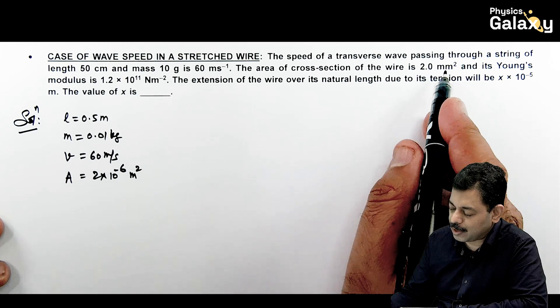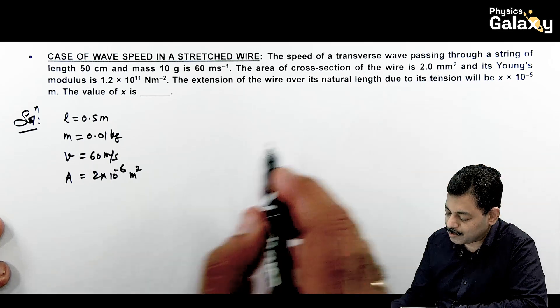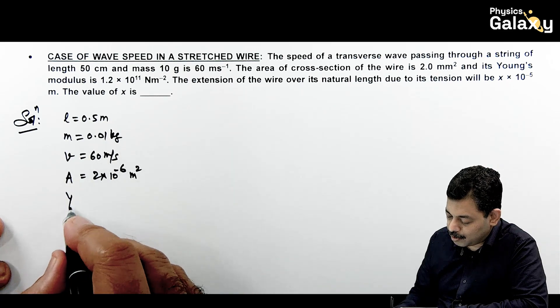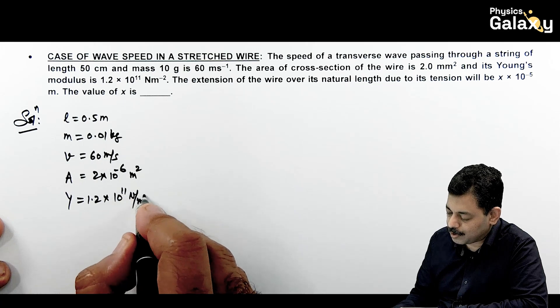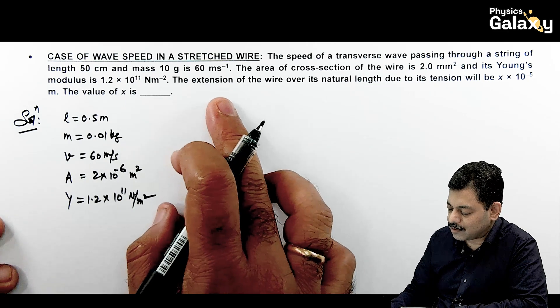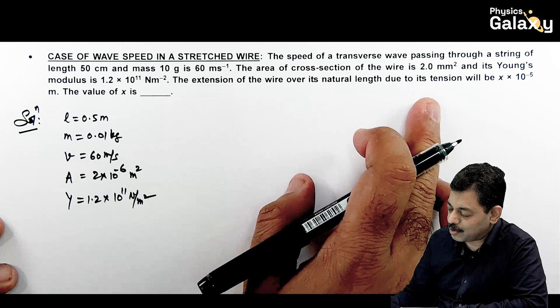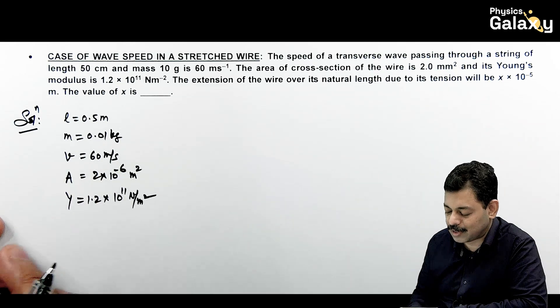This is mm square, so we will write it 10 to the power minus 6, and its Young modulus is also given. Data is quite a lot: 1.2 into 10 to the power 11 N/m². Now it is asking the extension of the wire over the natural length due to the tension will be. Extension calculate karna hai.